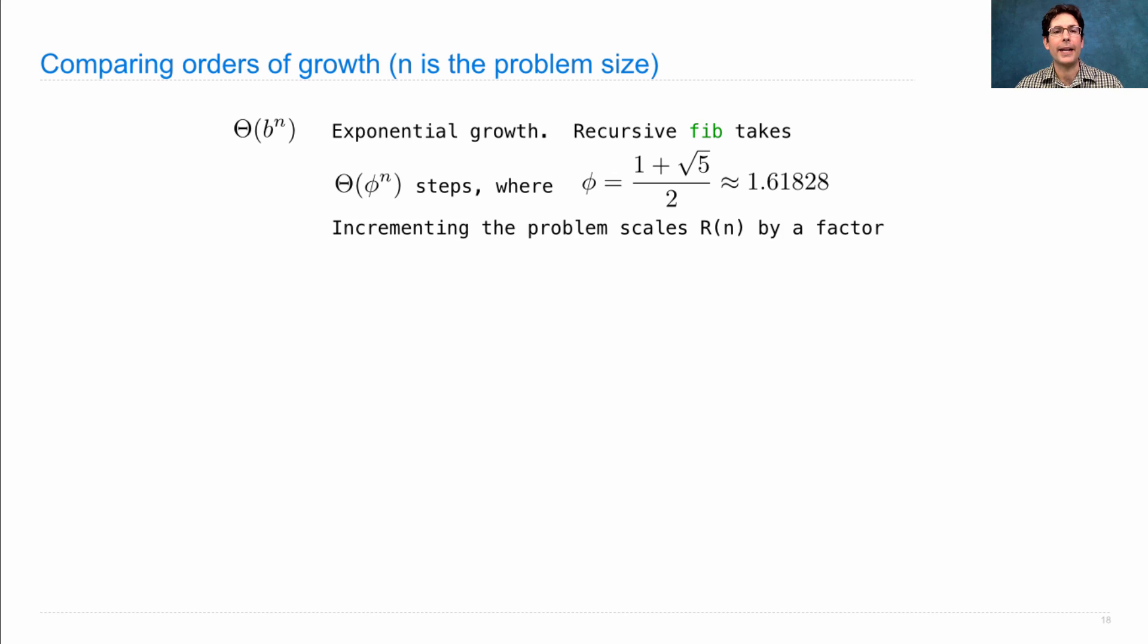A way to recognize exponential growth is that when you add 1 to the problem size, so fib 21 instead of fib 20, the work required scales by a whole multiplicative factor. So one more requires double the work, or one more requires 1.6 times the number of work. That's an indication of exponential growth.